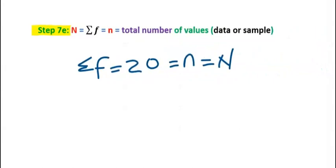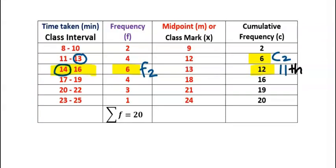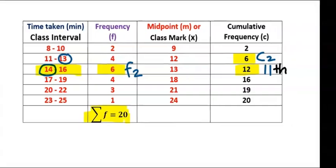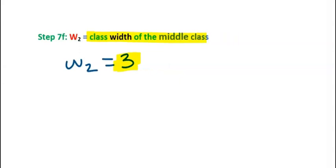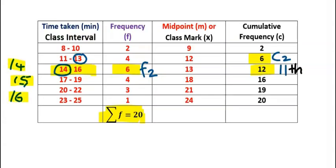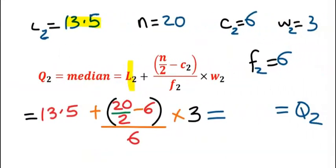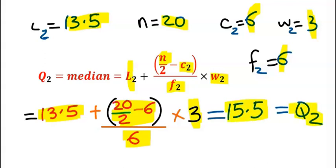The total number of samples N is 20, obtained from the table, and the class width remains 3, that is 14, 15, 16. Substituting into the middle quartile formula: for L2 substitute 13.5, for N substitute 20, for C2 substitute 6, for F2 substitute 6, and for W substitute 3. Solve N over 2 first, subtract C2, divide by F2, multiply by W, then add to L2. The result is 15.5 as the median or middle quartile.